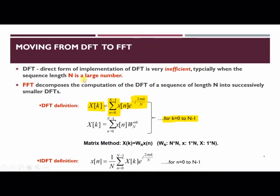Now as we are moving from discrete Fourier transform to fast Fourier transform, what does DFT do? DFT performs the Fourier transform on discrete time signals. This DFT computation is inefficient typically when the sequence length available is a very large number.